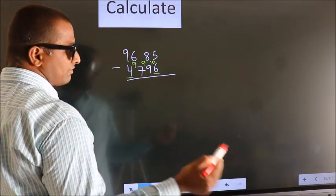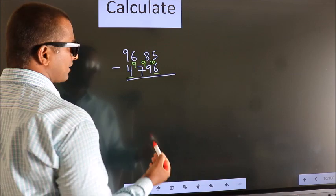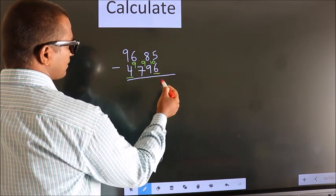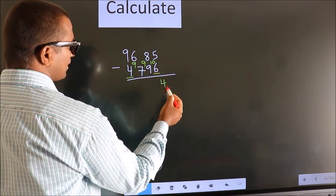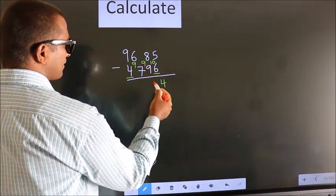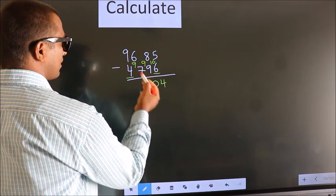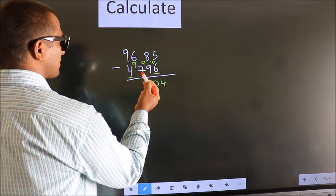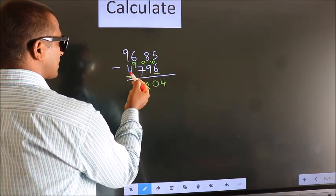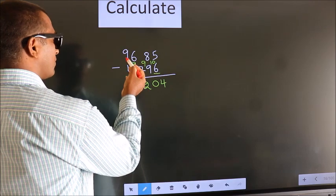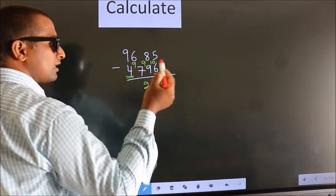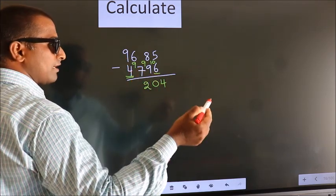Now we subtract 10 minus 6, that's 4. Then 9 minus 9 is 0. Then 9 minus 7 is 2. Now for the first digit we do 9 minus 4, we get 5.